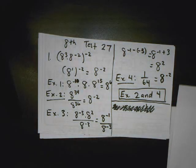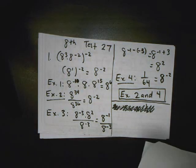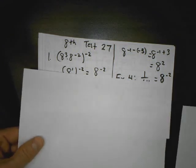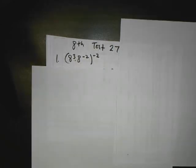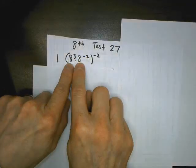Eighth grade math, test 27. First problem, we have to simplify the expression that they gave us in the problem. The way we do that is we go inside the parentheses first. Inside the parentheses, we add those two exponents.